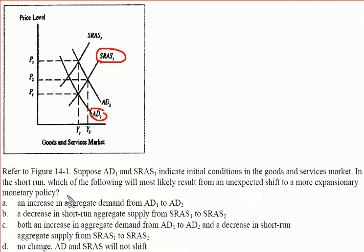The first thing right off the bat that's likely to happen is that aggregate demand will shift to the right. A is saying just that — an increase in aggregate demand from AD1 to AD2. So let's put a checkmark by that.